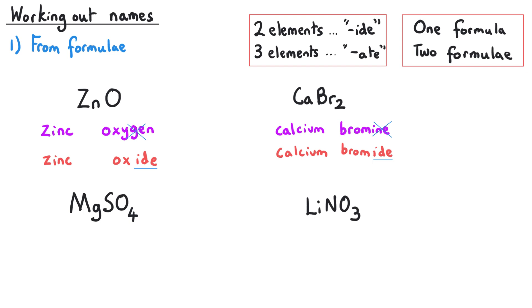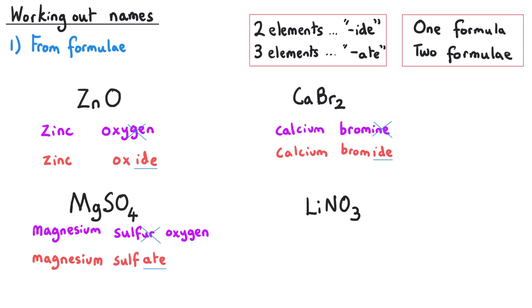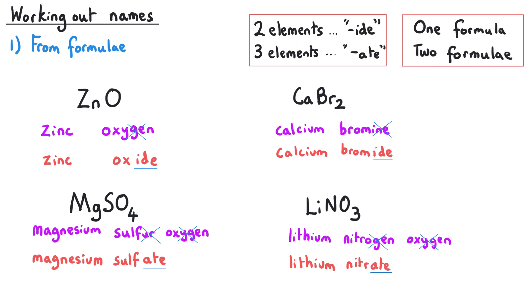The bottom two examples both have three elements present. The first has magnesium, sulfur, and oxygen — so this ends in '-ate'. Magnesium gets its full name; sulfur loses the '-ur' at the end and that gets replaced by '-ate', giving magnesium sulfate — the oxygen gets no representation in the name. The last compound has lithium, nitrogen, and oxygen; lithium gets its full name and nitrogen becomes nitrate, so this is lithium nitrate.